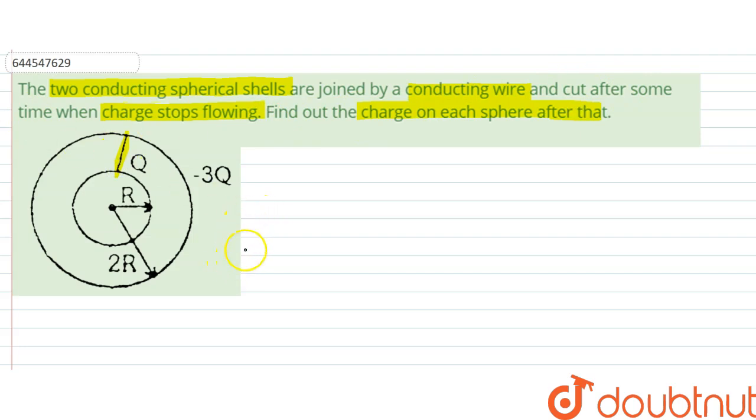So first of all, let us say that this is the inner shell and this is the outer shell. When the charge will stop flowing is when the inner shell will have same potential as outer shell.